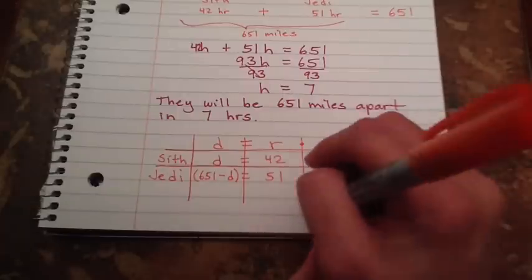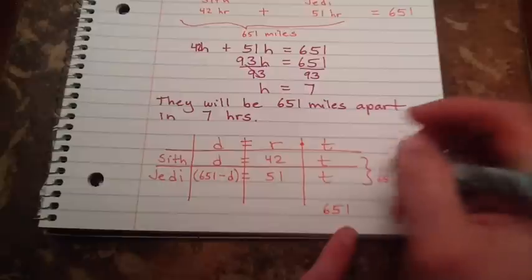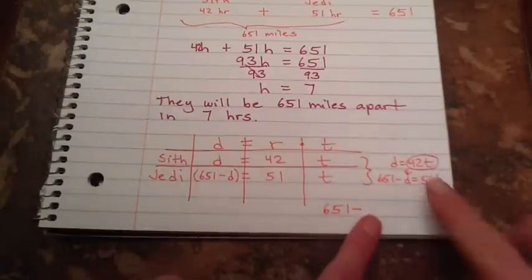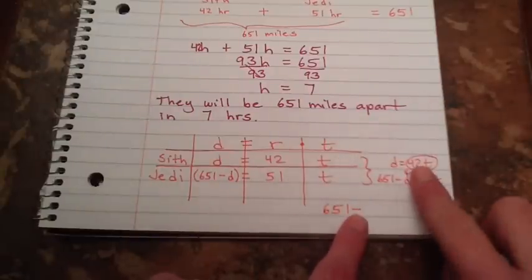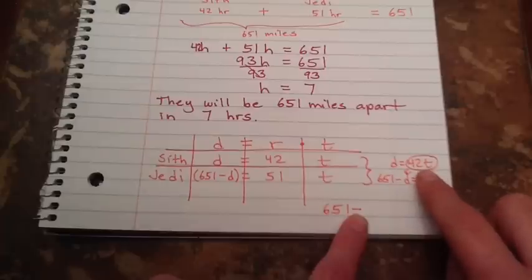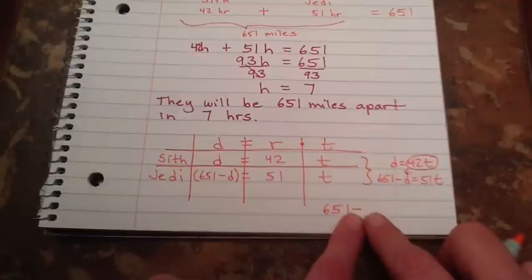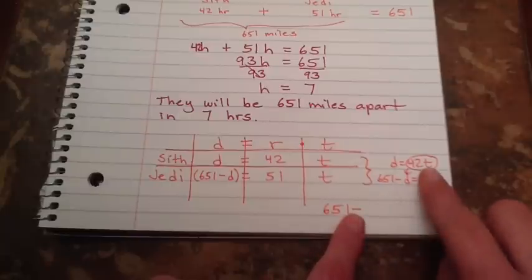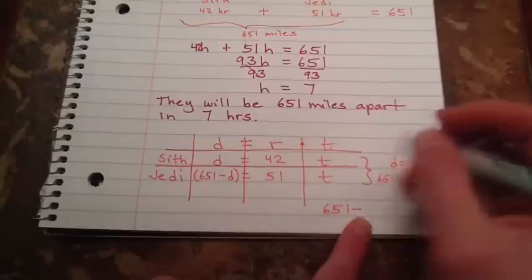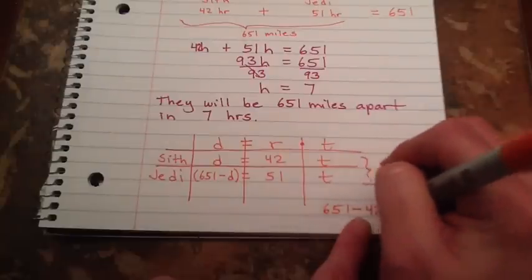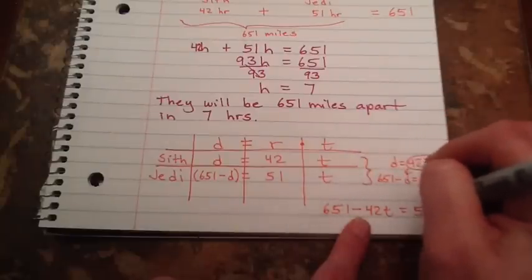And then you would end up with 651 subtracting. And because I only have to distribute that negative to the one term. I'm not going to put it in parentheses. But if there was two terms there I'd have to have it in parentheses. Because I'd be distributing the negative to each of them. There's only one. It's already distributed to it. So I can bring that down.